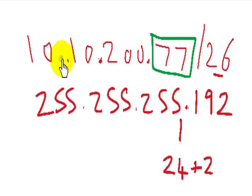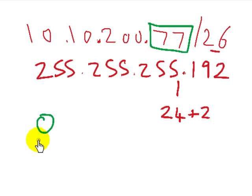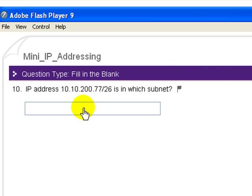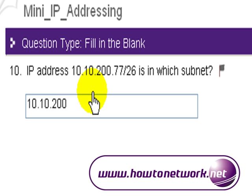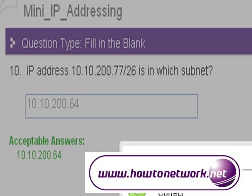Alright, so 10.10.200 dot. The first octet we're allowed to have zero. The next octet we're added up in 64. And the one after that is 128. We can immediately see the answer that that number 77 has to be in this 64 subnet. So 10.10.200 dot 64. Press submit and we got that correct.